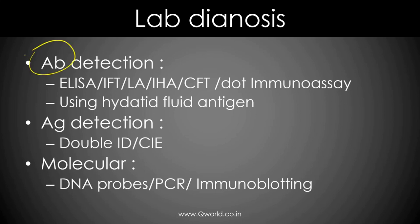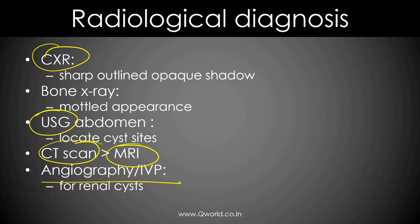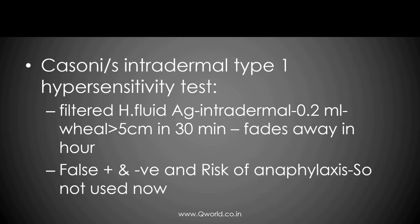For lab diagnosis, you can do antibody and antigen detection. We can also use molecular methods like PCR and DNA probes. X-ray, sonography, CT scan, MRI and other radiological procedures help locate where the cyst is. Earlier there was a skin test known as the Casoni test, which detects type 1 hypersensitivity to the hydatid fluid antigen, but it is a very risky test due to the risk of anaphylaxis, so it is not used now.